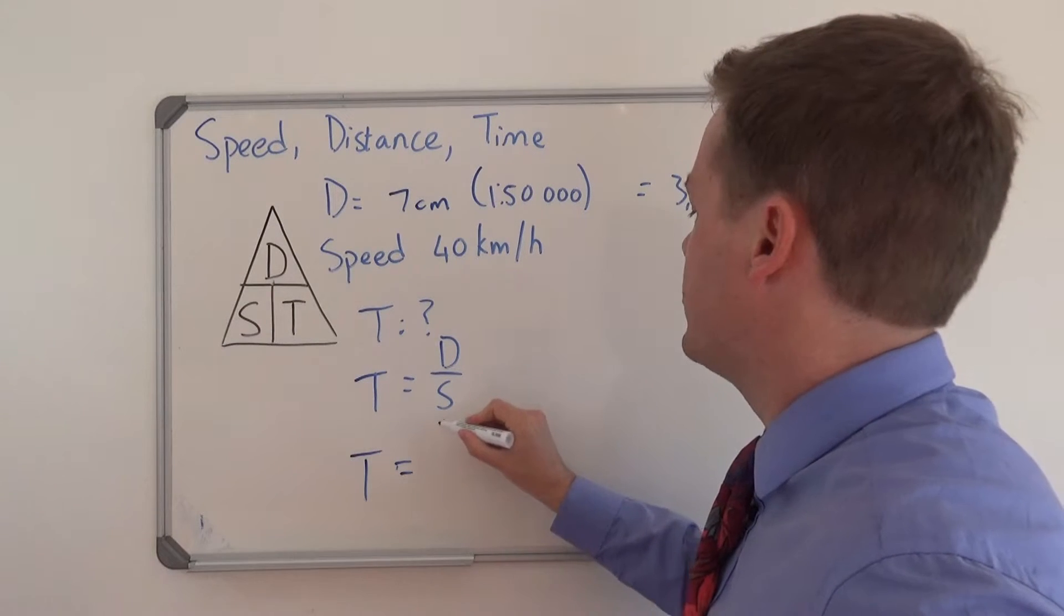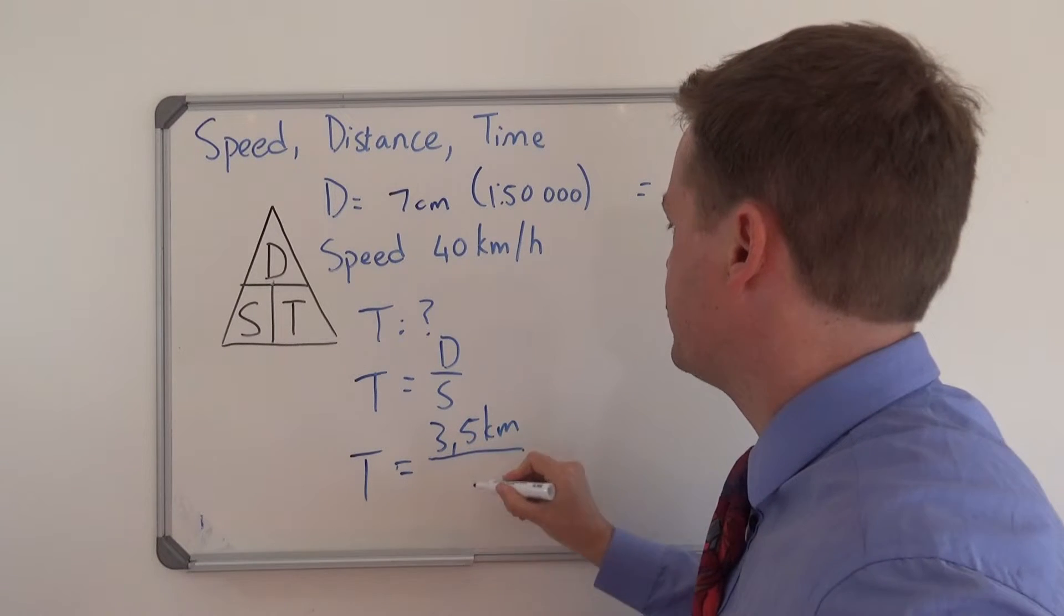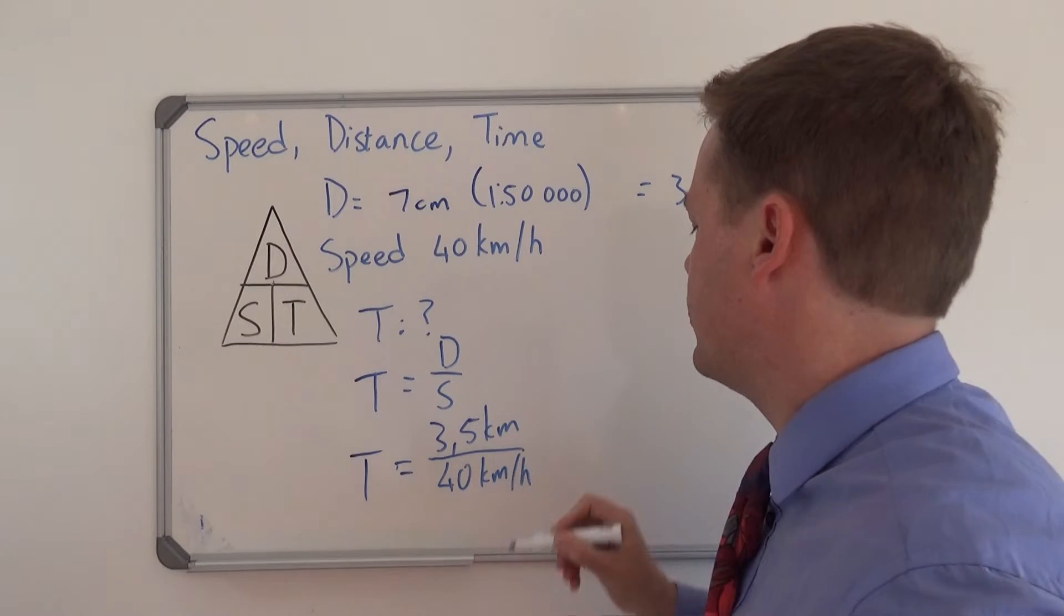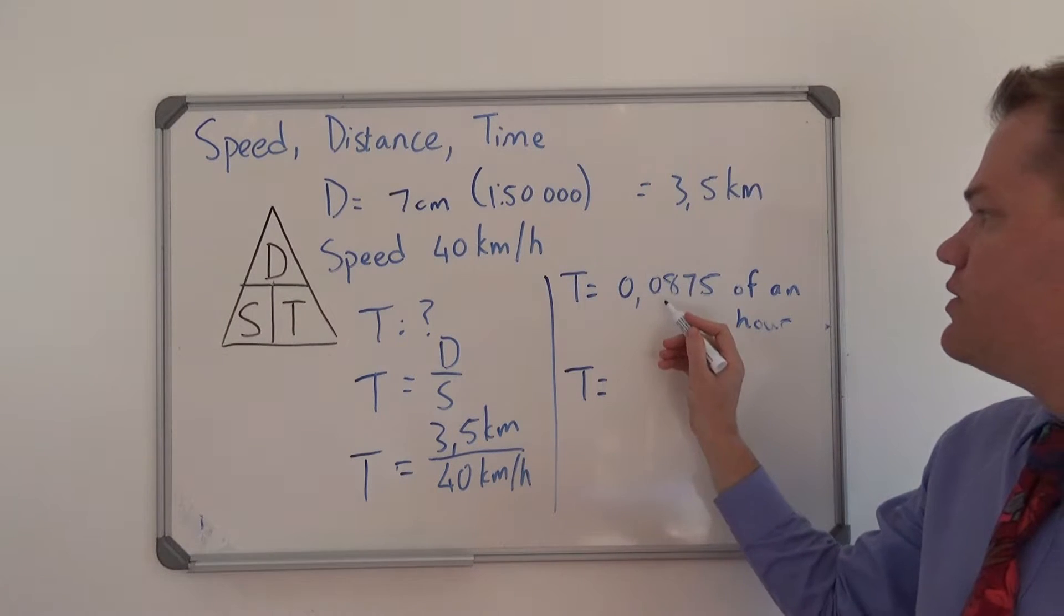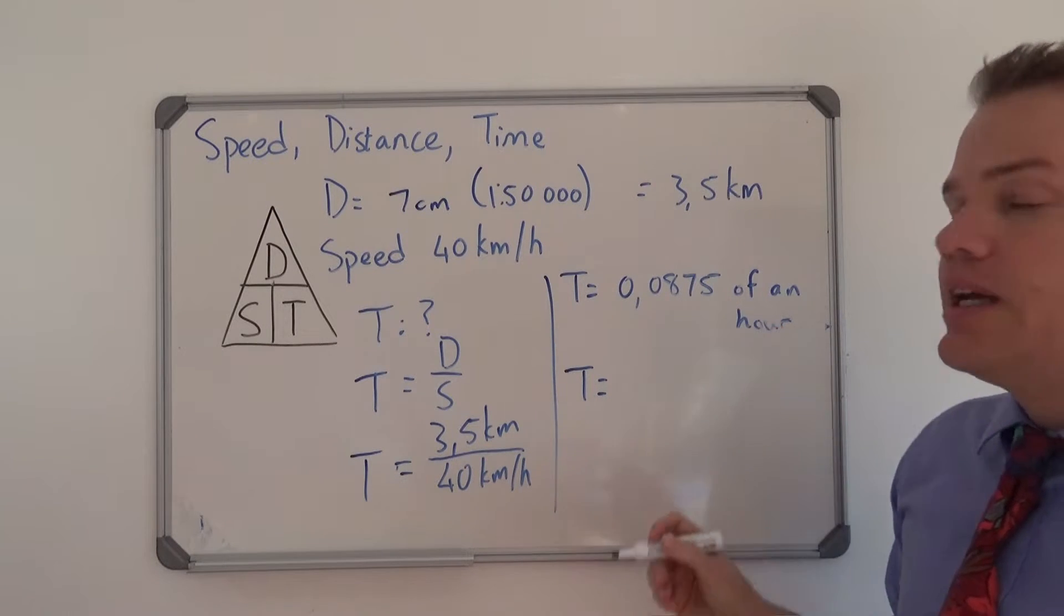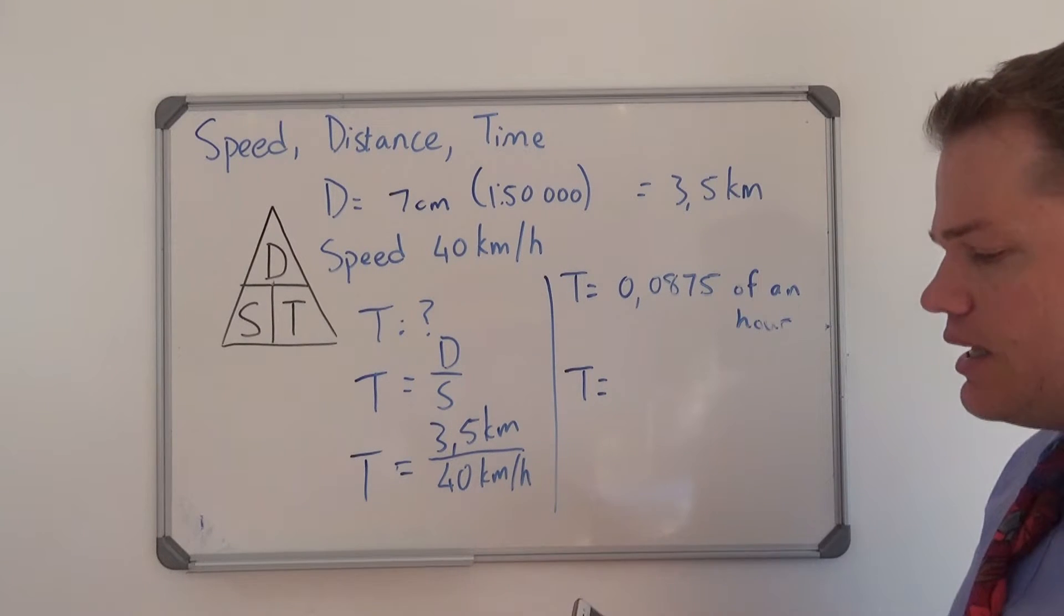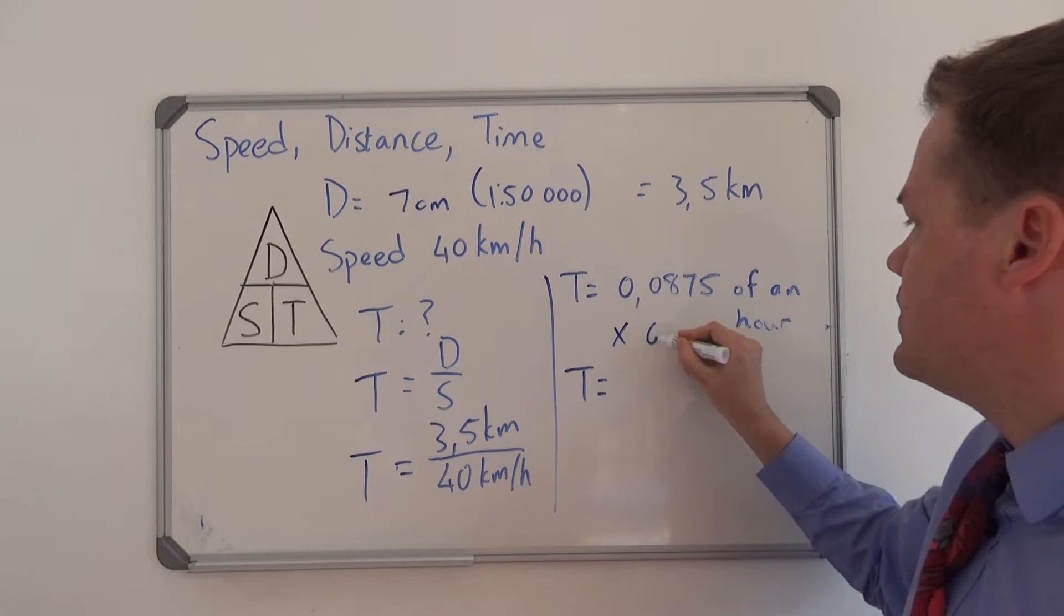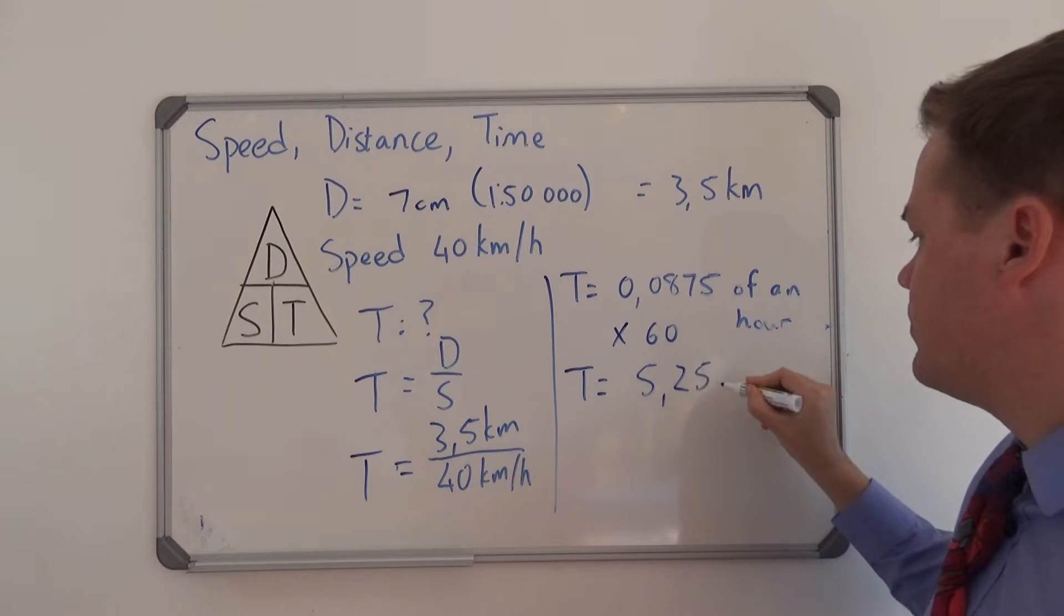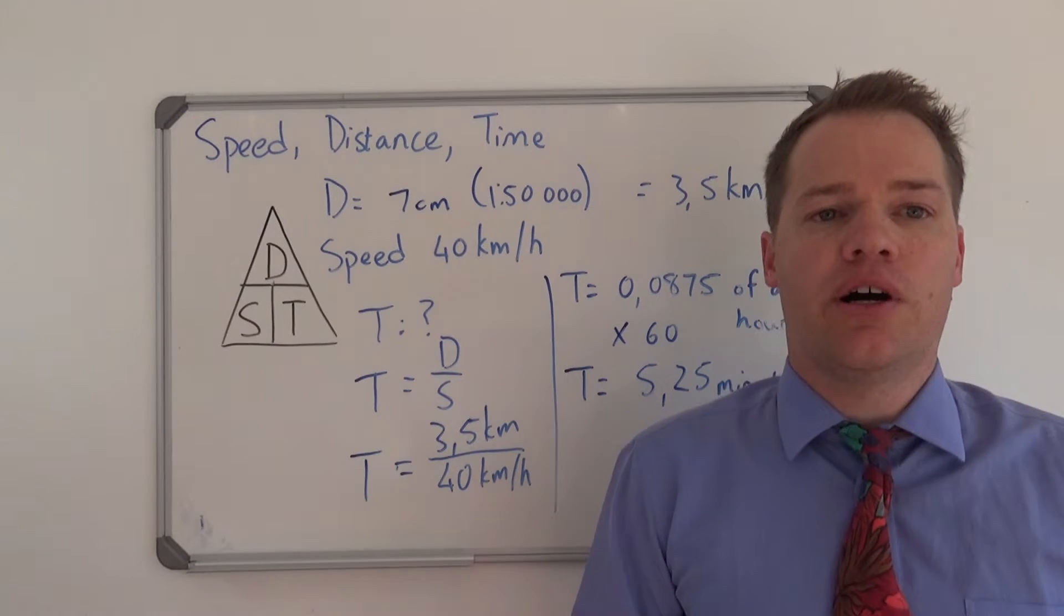So now we can apply the formula: time equals 3.5 kilometers divided by 40 kilometers per hour. Right, so we have 0.0875 of an hour, and in order to convert that to minutes we say times 60, and the answer is 5.25 minutes.